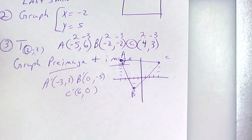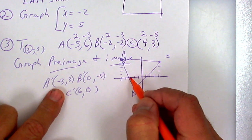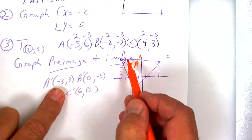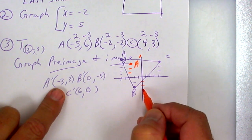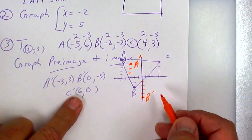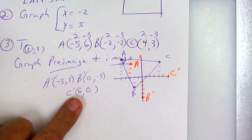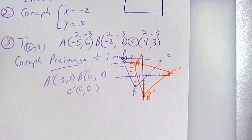We're going to use a different color — since we're close to Halloween I'm going to use orange. So A prime is at negative three, up three. Notice we shifted it over two and down three. My graph might not be perfectly aligned since I'm not using graph paper. B prime is at zero, down five. And C prime is at six, zero — way over there. The orange triangle is your translation, the image.